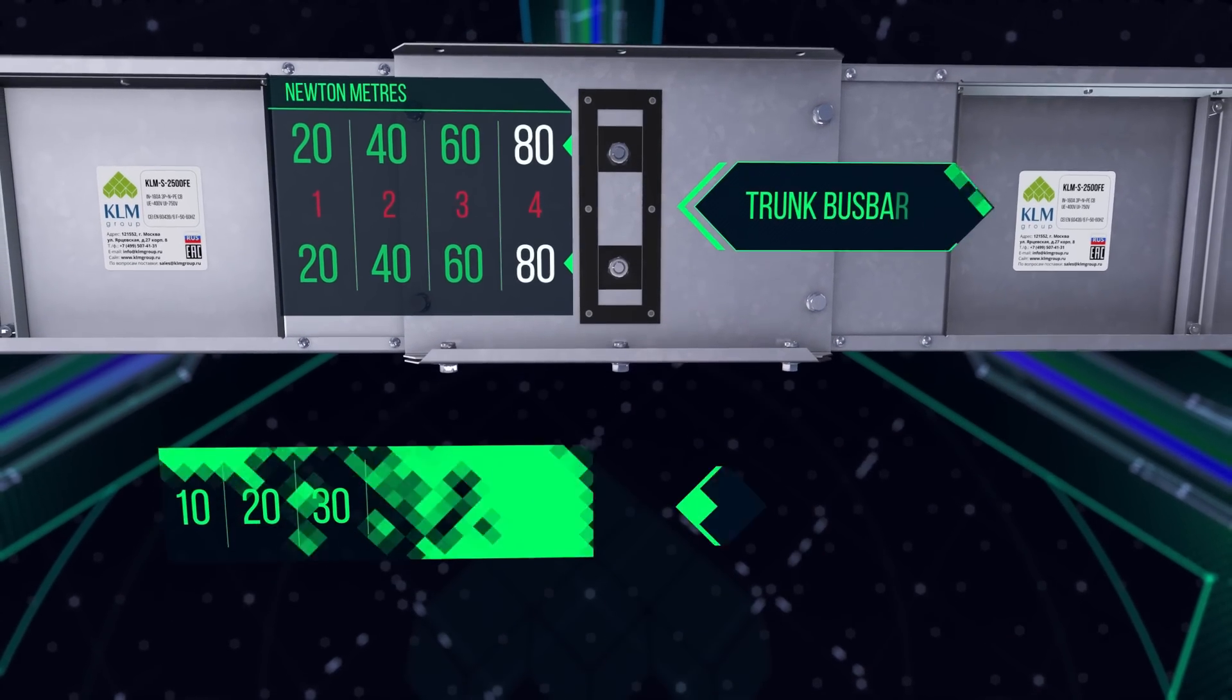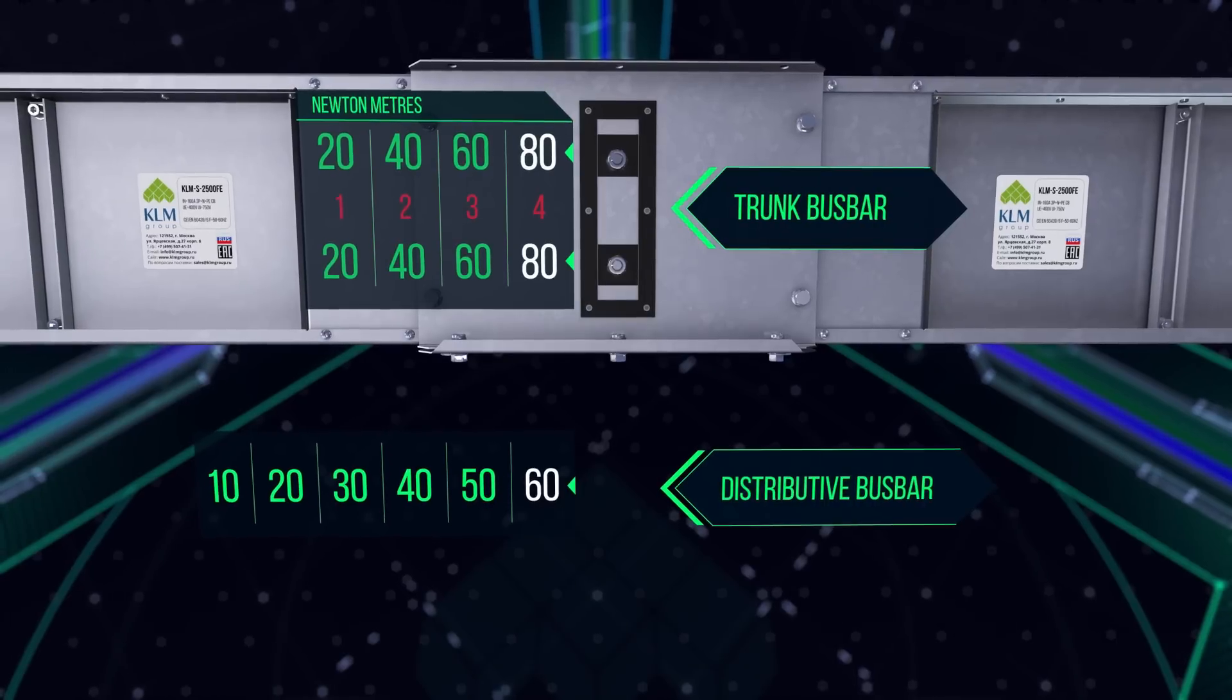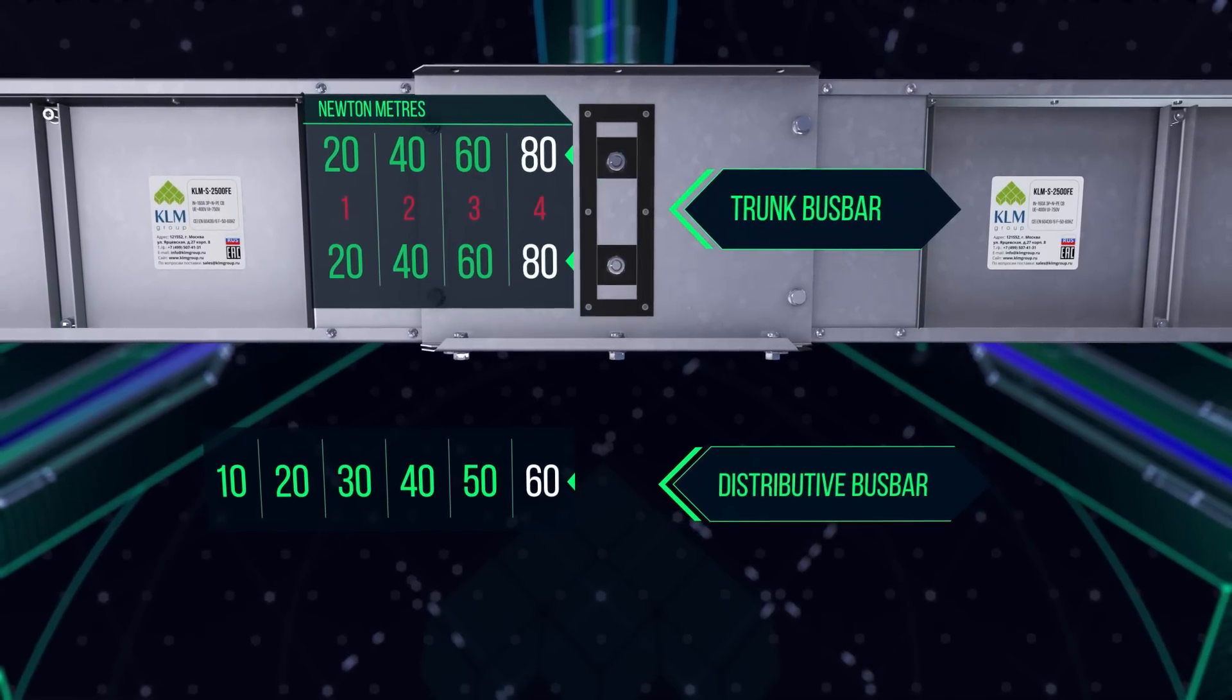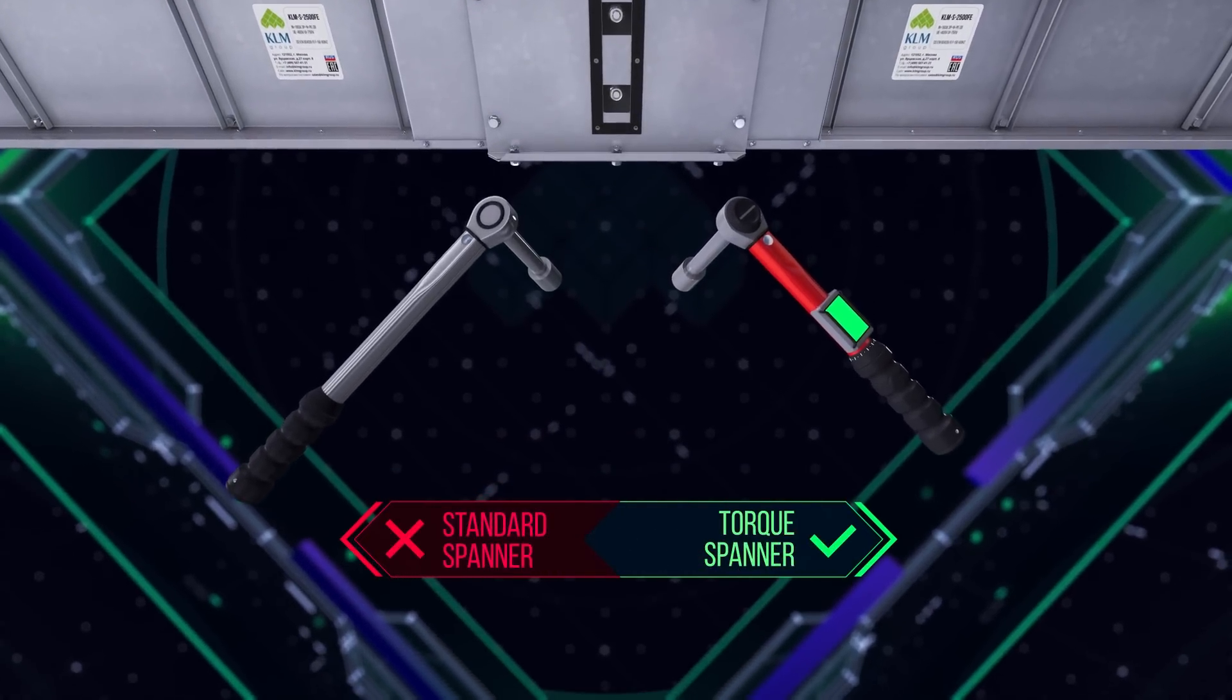For a distribution bus bar trunking system, the clamping bolts must be tightened in increments of 10 newton meters until a torque of 60 newton meters is achieved. The clamping bolts must not be tightened using a standard spanner. Doing so may cause failure of the junction unit.